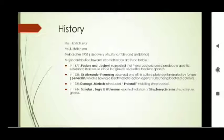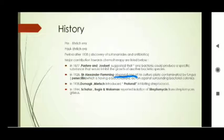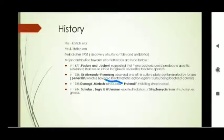In 1877, Pasteur and Joubert suggested that bacteria can produce a specific substance that can be used against another bacteria. Then, in 1928, Sir Alexander Fleming observed that his culture plates were contaminated with fungus, and this fungus was found to have a bacteriostatic action.